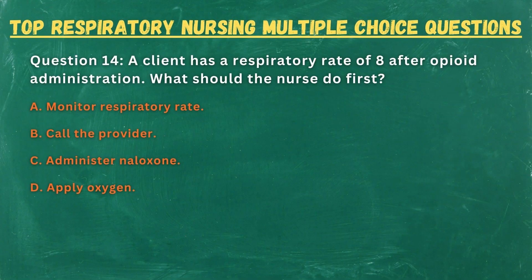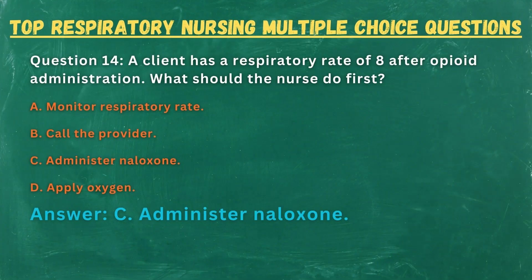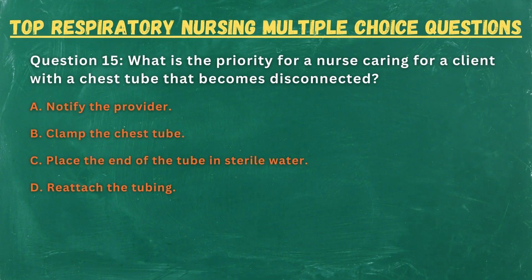Question 14. A client has a respiratory rate of 8 after opioid administration. What should the nurse do first? A. Monitor respiratory rate. B. Call the provider. C. Administer naloxone. D. Apply oxygen. Answer: C. Administer naloxone.